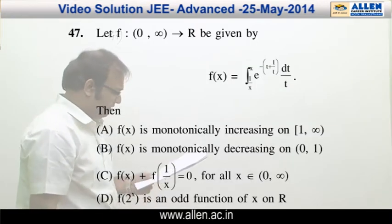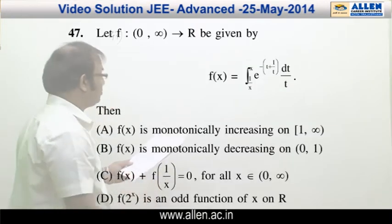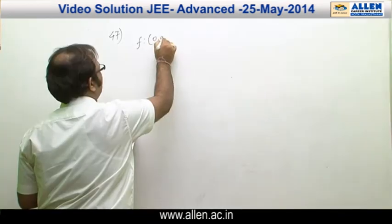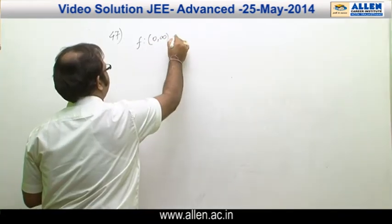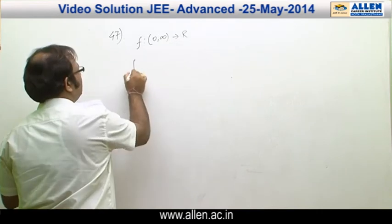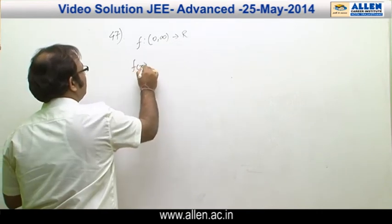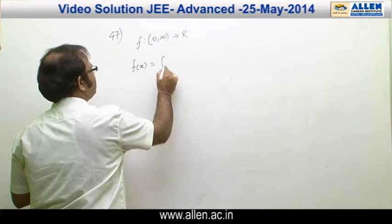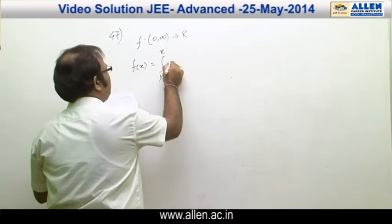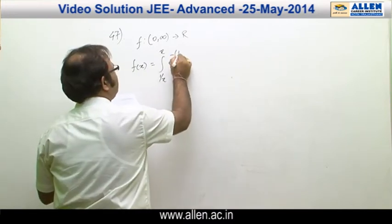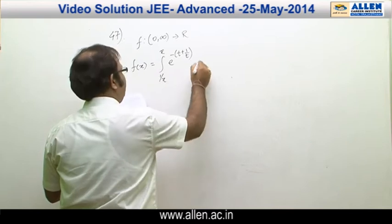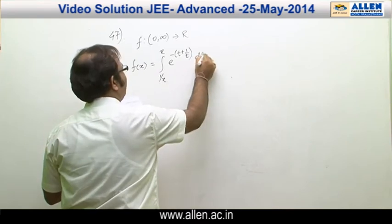In question 47, we are given a function f defined from open (0, ∞) to ℝ, where f(x) = ∫ from x to 1/x of e^(−t + 1/t) / t dt.